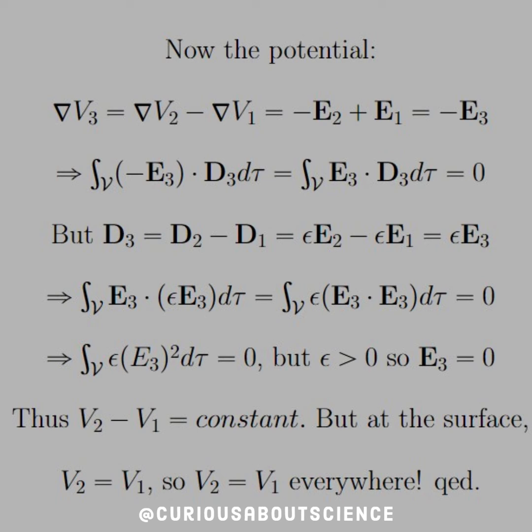Now we have to deal with the del operator operating on the potential. Again, like we've seen in the other parts of the question, if the del operator is operating on V3, then it is the difference of V2 minus V1, and we know that those are the gradients of the potential, so that's equal to negative E2 plus E1, since two negatives make a positive. But going back to our definition, that is just negative E3.